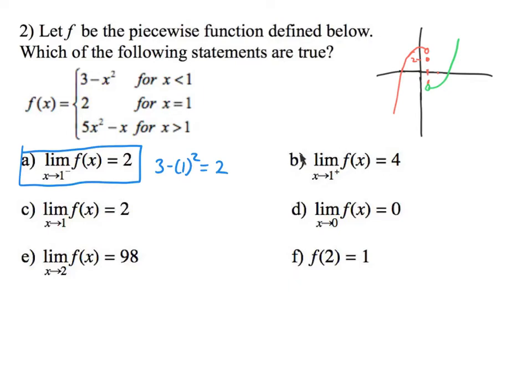All righty, let's look at this one, b. The limit of f(x) as x approaches one from the positive side. So from this side, we're looking at the green part. What is it coming from the positive side? So we're only looking at this function. This is the function we're looking for for the values bigger than one. So what we have there is we have, now using the function 5(1)² - 1.